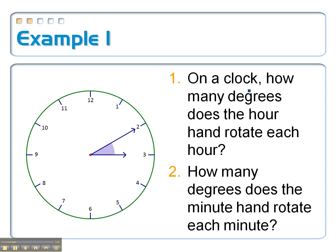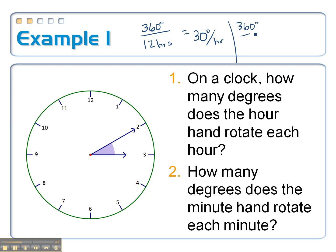If I were to take a clock and break it up into degrees, the question is: how many degrees does the hour hand rotate each hour? I take 360 degrees and divide by 12 hours, and I get 30 degrees per hour. How many degrees does the minute hand rotate each minute? I take 360 degrees and divide by 60 minutes, cancel the zeros, and get 6 degrees per minute.